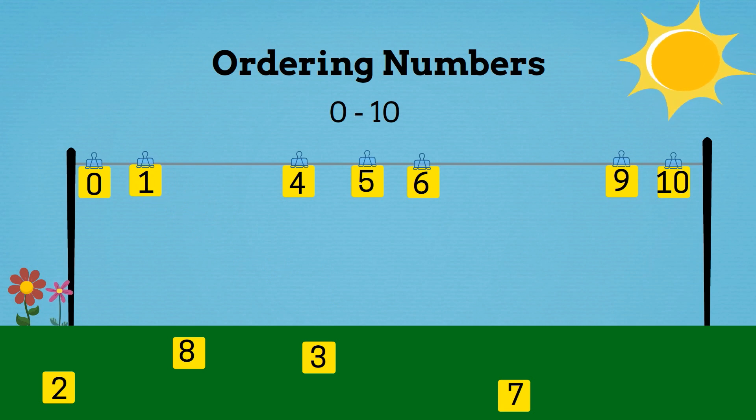What number is 1 less than 4? It's 3. 3 is 1 less than 4. So we'll put 3 before 4.